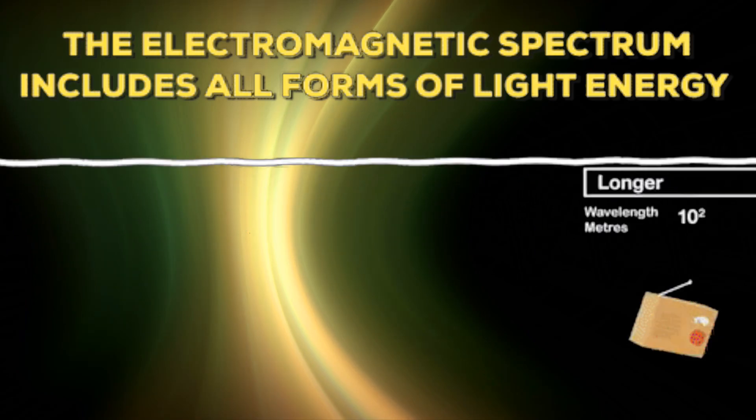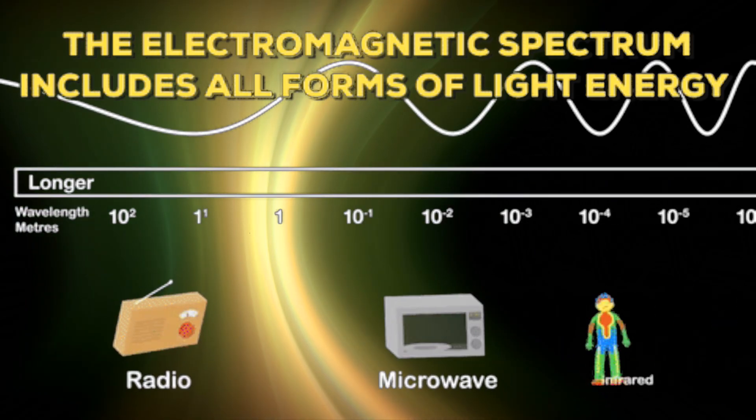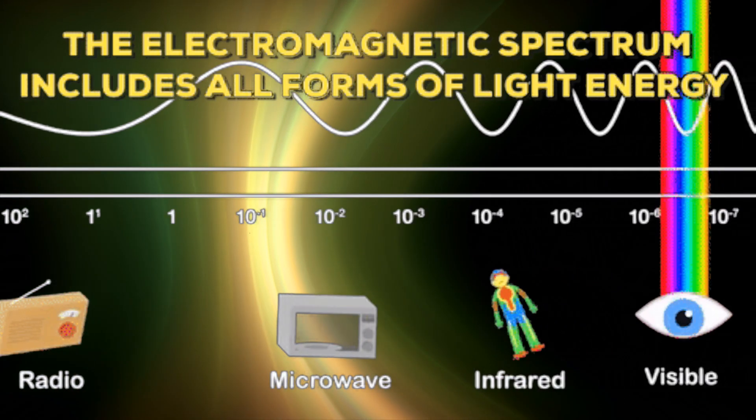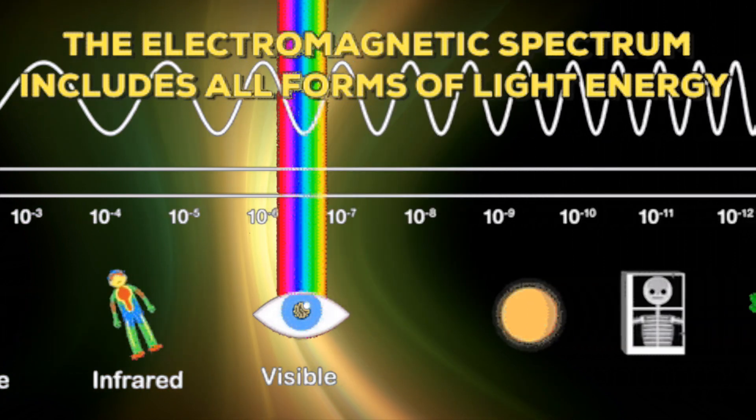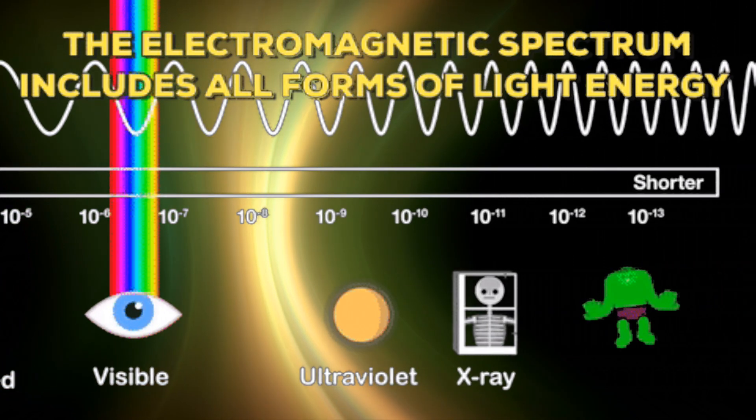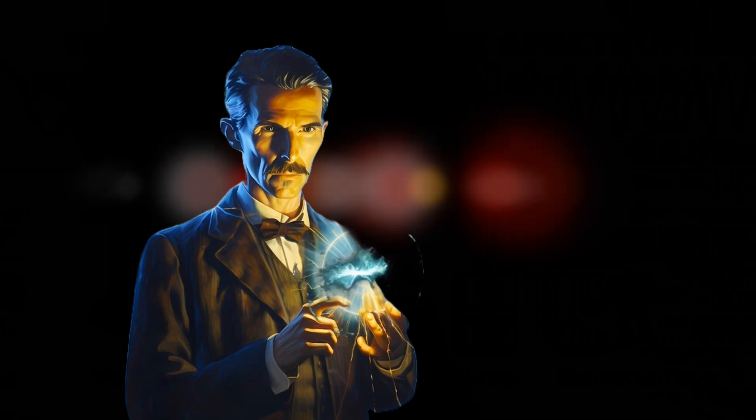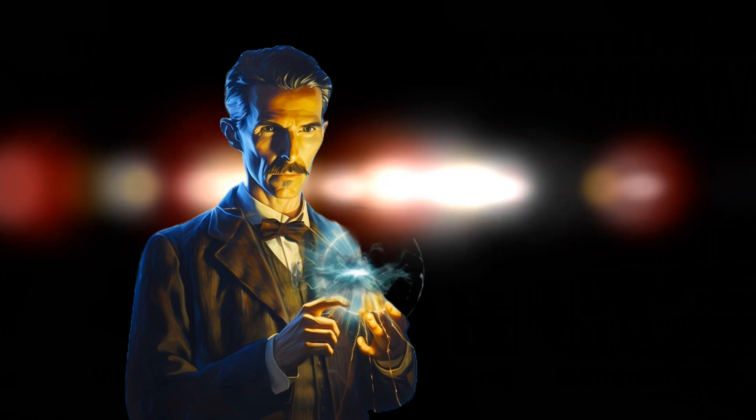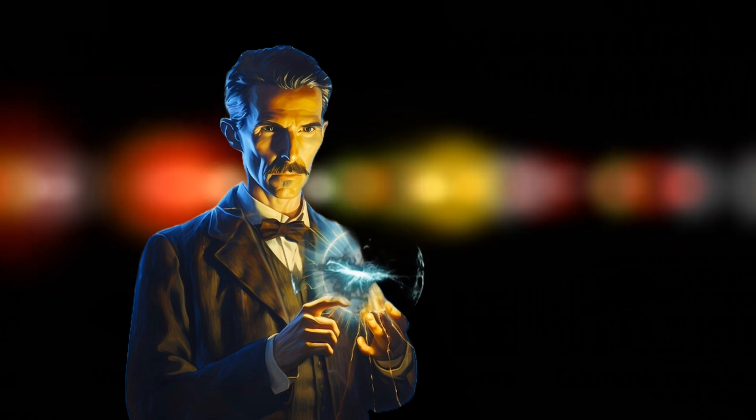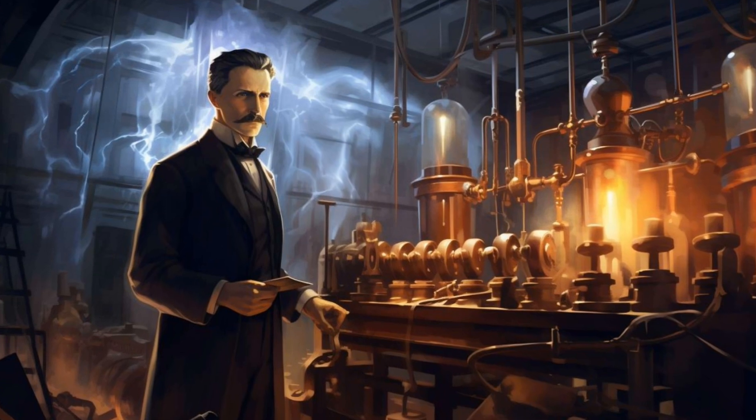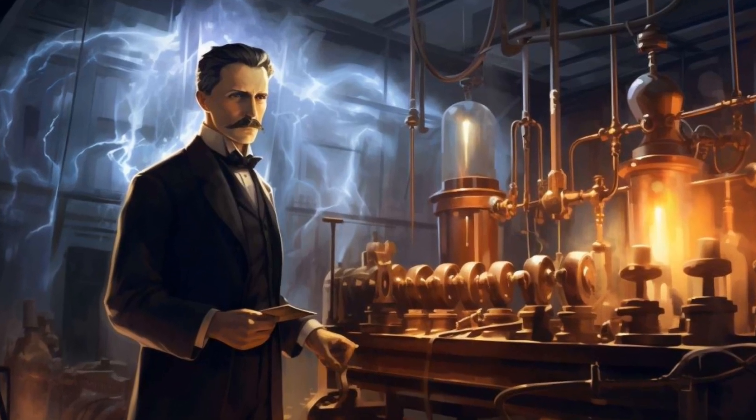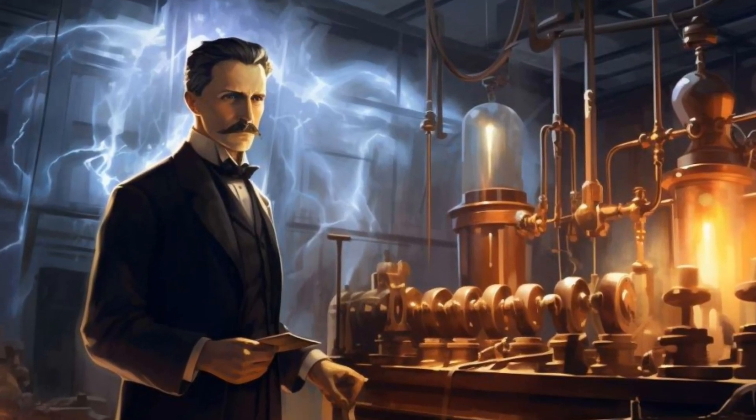The electromagnetic spectrum is crucial for various scientific, medical, and technological applications. Tesla's work on alternating current involved manipulating the frequency of electrical currents. He believed that understanding and harnessing different frequencies could unlock new possibilities and insights.